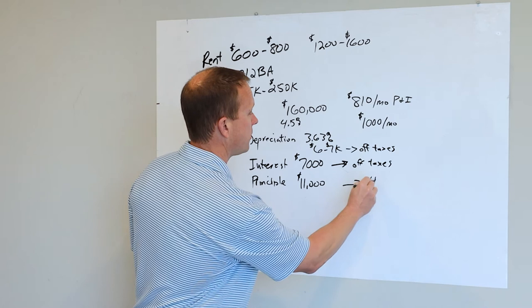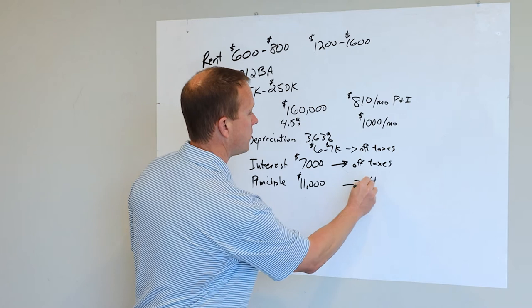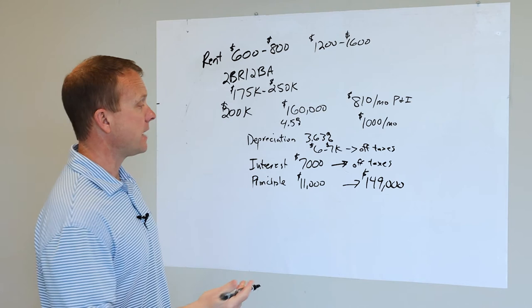So now you owe $149,000. So when you get ready to sell it, or even if you don't sell it, you've gained equity in that. So you took your $40,000 and turned it into equity here.